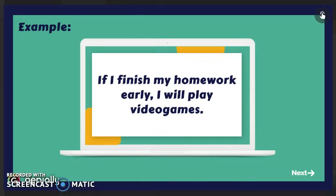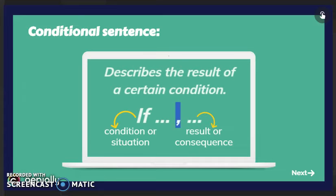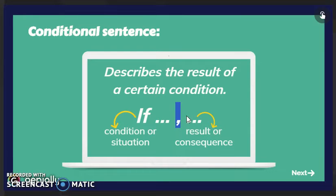We checked this topic before we stopped going to school — I hope you remember, and if you don't, you can continue watching the video. A conditional sentence describes the result of a certain situation and it has two parts. The first one is called the if clause, also called the condition or situation. After the if clause we have a comma, which is very important because the comma separates the if clause and the main clause.